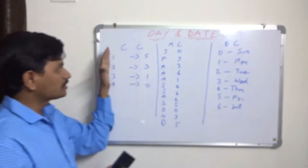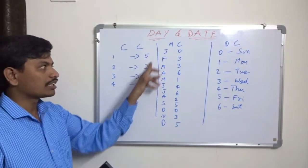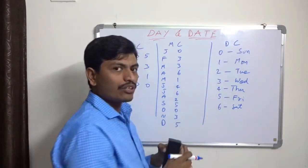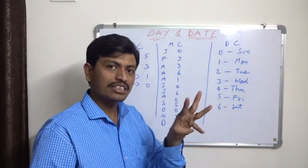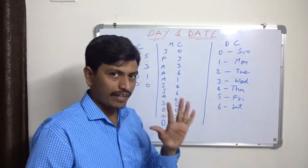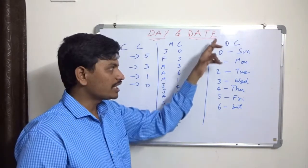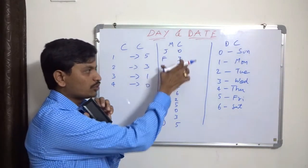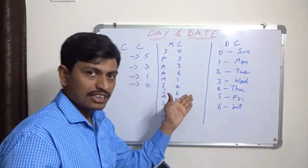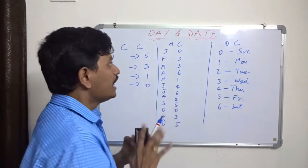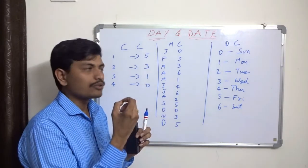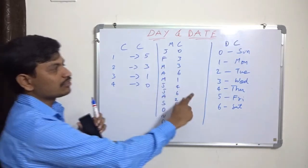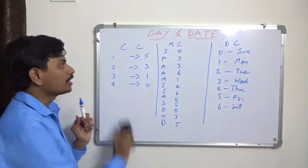The century codes are 5, 3, 1, 0 — you have to memorize these. The day codes zero to six are very easy, starting with Sunday. So if we got 3 as the remainder we start from Monday: Monday, Tuesday, Wednesday, Thursday. These codes are mostly easy to learn — only the month codes are somewhat tricky: 0, 3, 3, 6, 1, 4, 6, 2, 5, 0, 3, 5. So the basic things we've learned: first, how to find odd days — divide by seven and take the remainder. Second, the codes: century code, month code, and day codes.